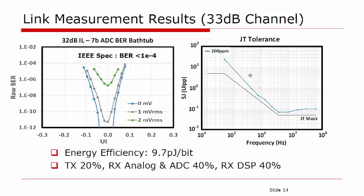In order to check the functionality and performance of the CDR, an input data stream with a frequency offset of 200 ppm is fed to the receiver. As shown in the figure on the right, the receiver is able to clear the IEEE tolerance mask.